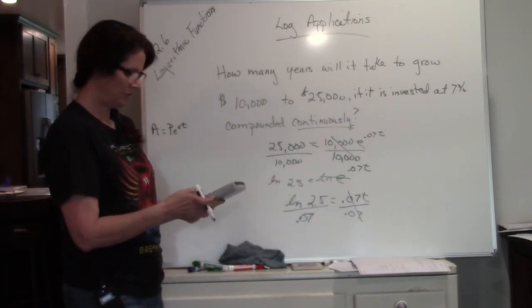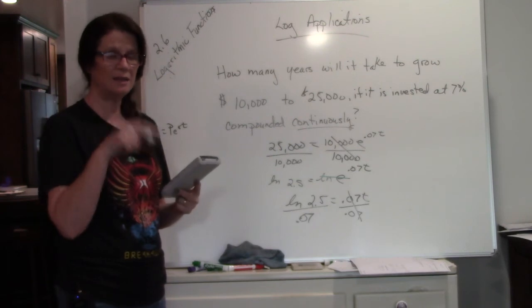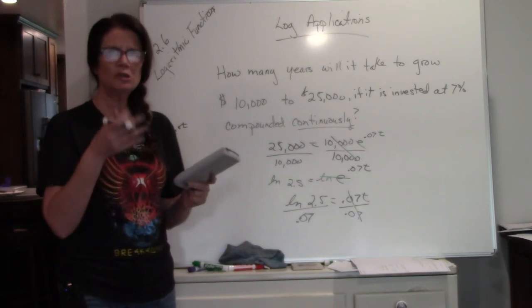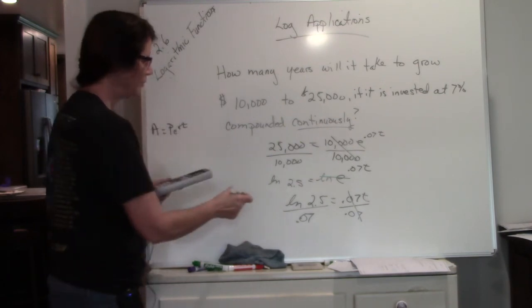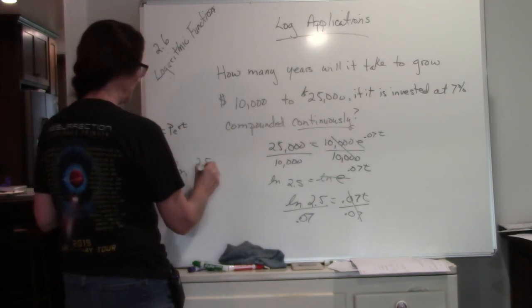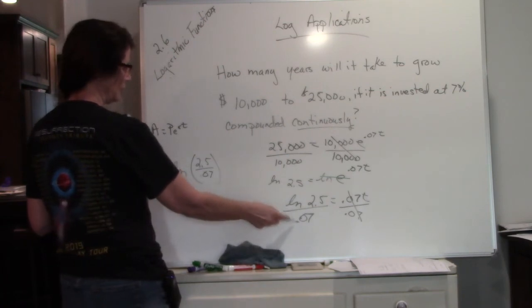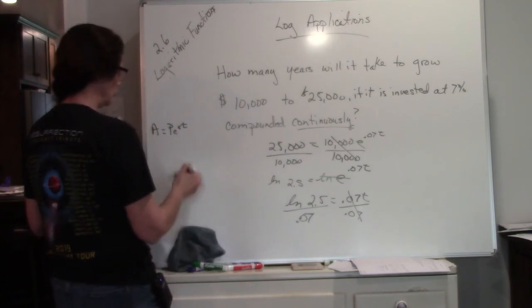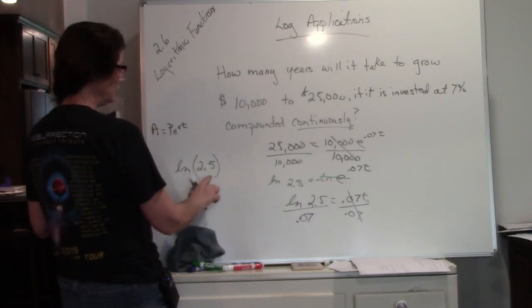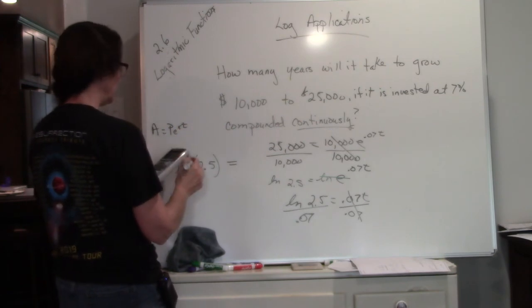So now you're going to use your calculator. You're going to do LN of 2.5. Make sure you close the parentheses and hit equals. Then you're going to divide by 0.07. If you don't close the parentheses and hit equals, what's going to happen is your calculator is going to read it like that. So we don't want to LN the 0.07, we only want to LN the 2.5. So in your calculator, the way you're going to type this in is you're going to do LN 2.5, hit equals or enter, and then you're going to take that answer.